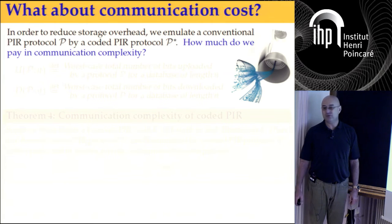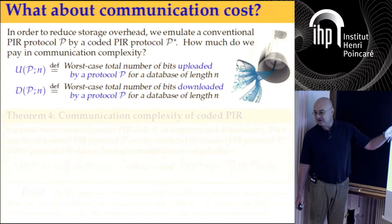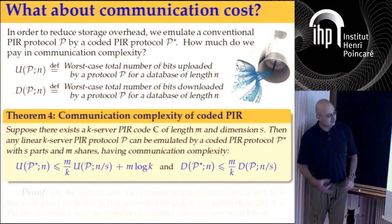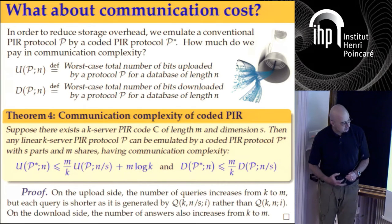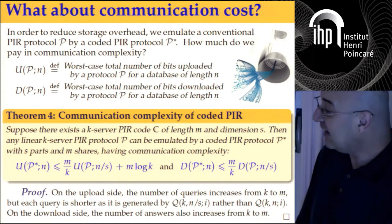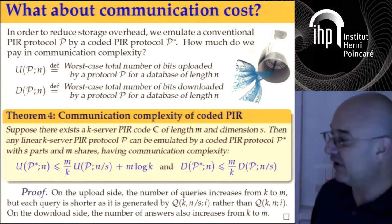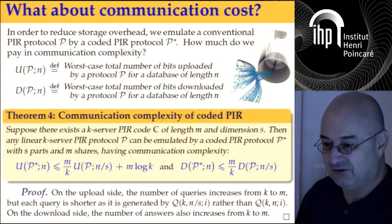Communication cost: we increase it, but not by much. We're sending M queries instead of K, increasing by a factor of M over K — which is constant. So this is a constant factor increase, which is usually not a big deal.